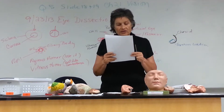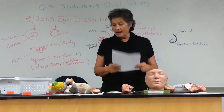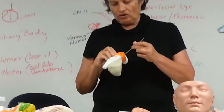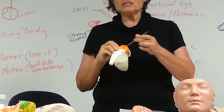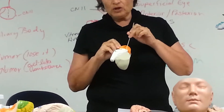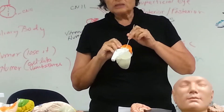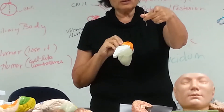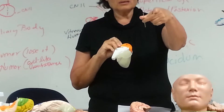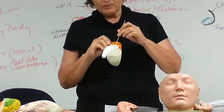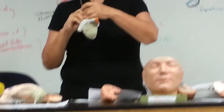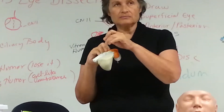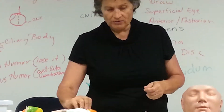Now they're asking you for the cerebral aqueduct, and I'll show it to you here. From the third ventricle, which is this general area, fluid — CSF — can flow through into the fourth ventricle. So that's the cerebral aqueduct, and that's the fourth ventricle.